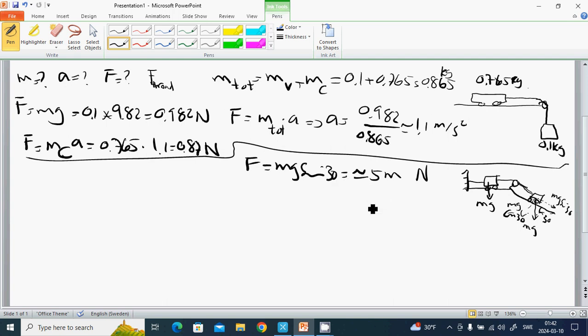We need to know about the thread force between those two. And it is the, when we have this one, and we want to have this one, then it is, it is one, and this, and then this. This is Mg sine 30.